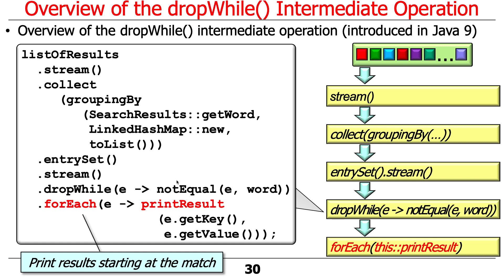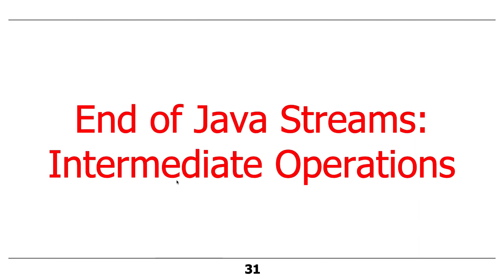It would be fun to write this code without using Java 8 streams — you'd discover it was a lot more tedious. You'd have to write loops going through a list of search results, throw them into some kind of map, then have nested loops to do the dropping logic. It would be very complicated and rather ugly. The nice thing about streams is that once you know them, you can read through it top to bottom and it all works quite nicely. So that's the end of our discussion on intermediate stream operations.